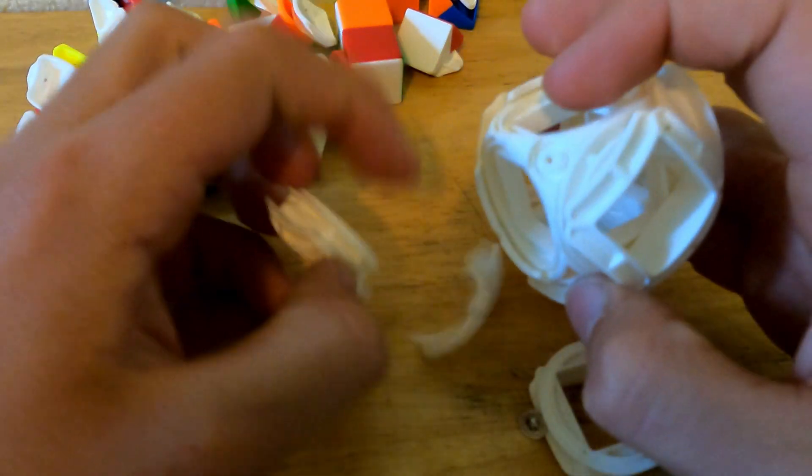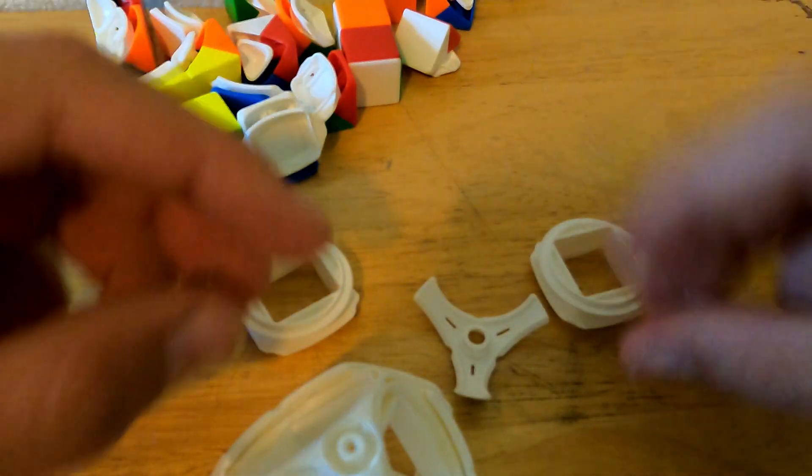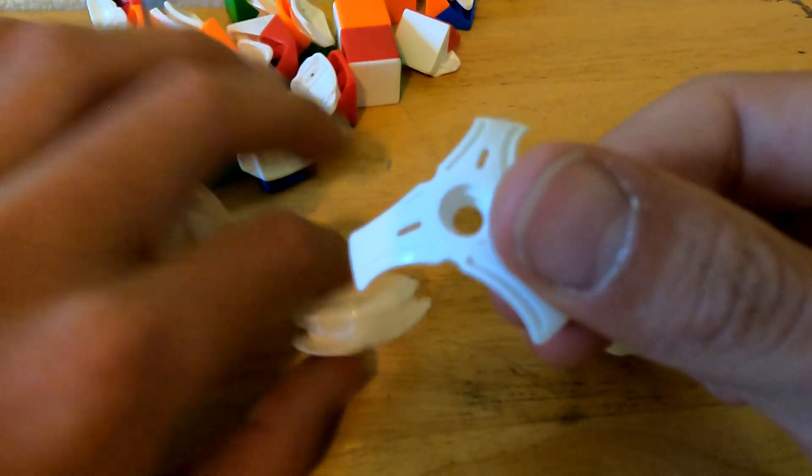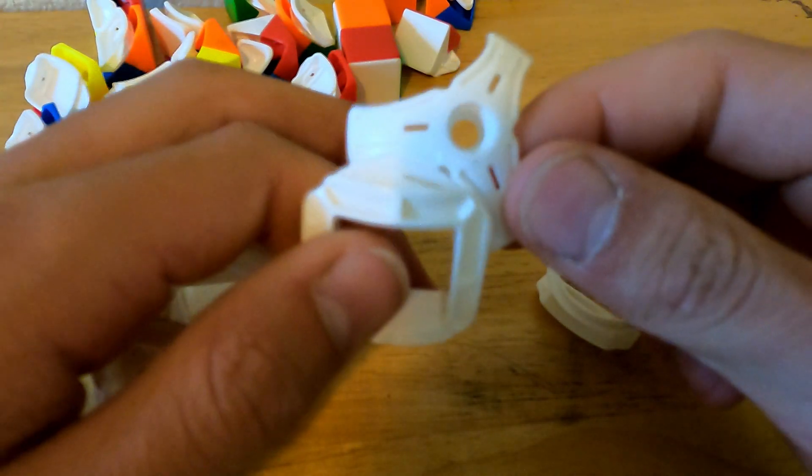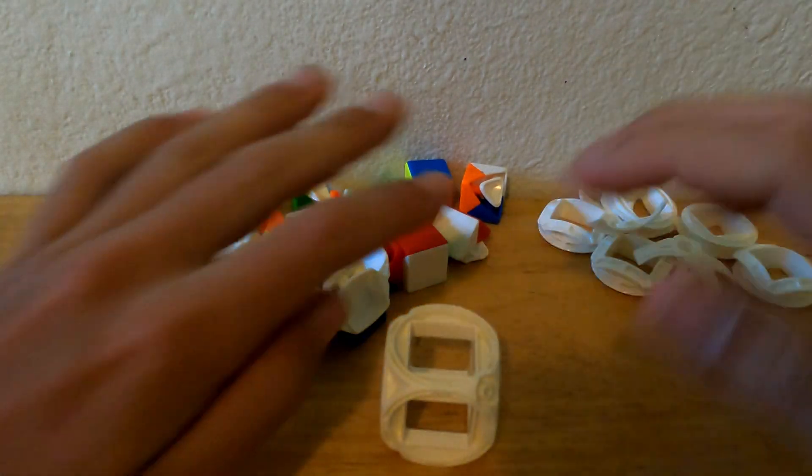Whoa. So they have a little tiny screw here, a spring, and then this on the inside. And then they have this little center of all the center pieces, and then they have the actual pieces that hold the pieces together. And this is what a 100% disassembled void cube looks like.